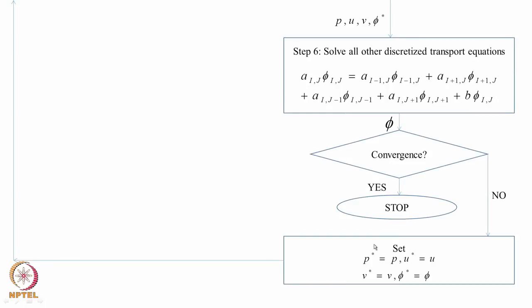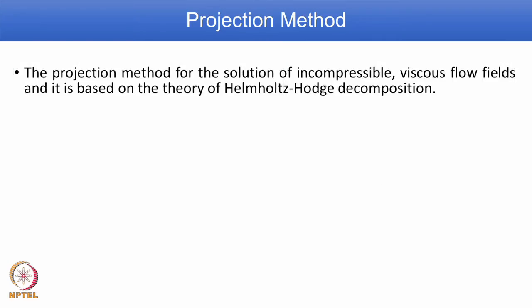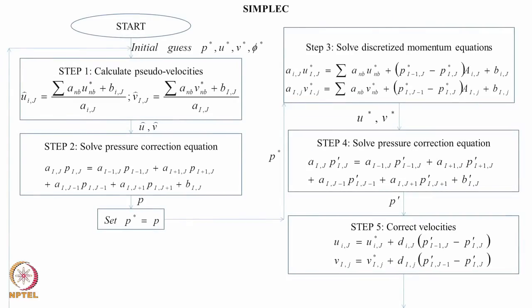You get P, U, V, and any other scalar phi. You solve the discretized transport equation for phi, check for convergence, and stop if satisfied. Otherwise, repeat the procedure from the first step — starting again from guess values. In SIMPLEC, the initial setup takes slightly longer, but comparatively it takes less time overall because the guess pressure and velocities are closer to the actual values.